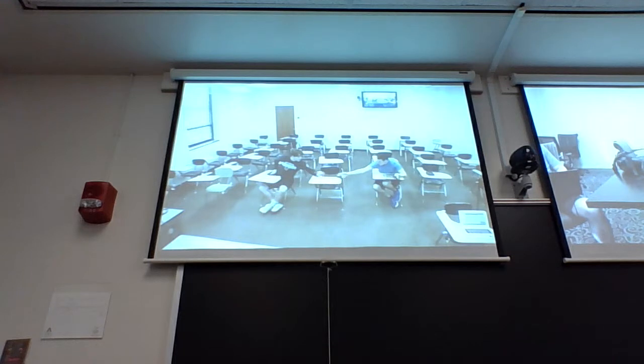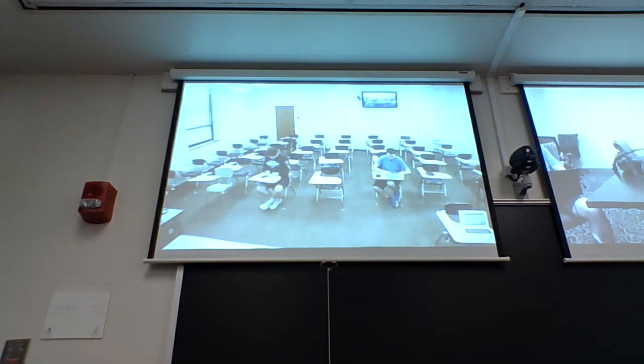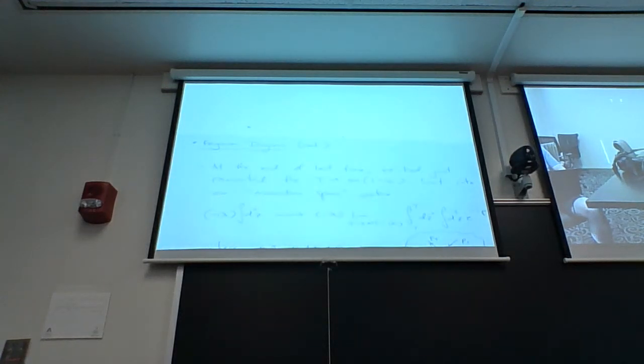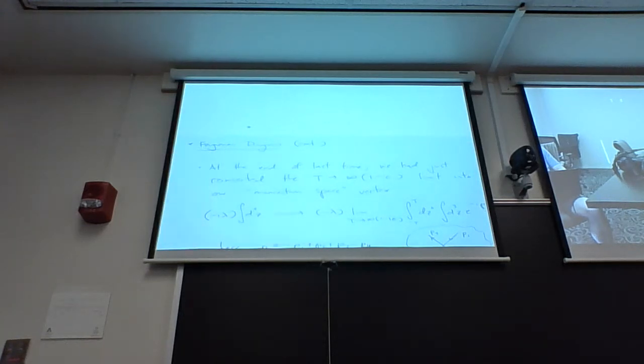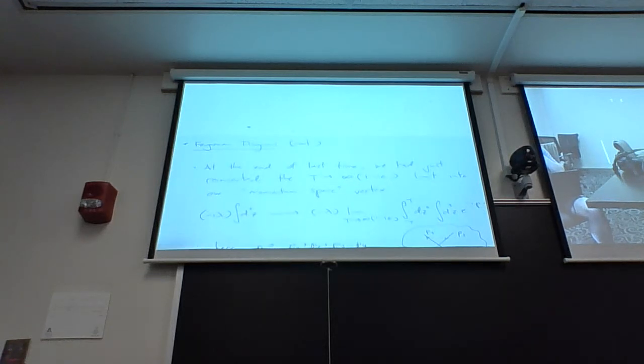At the end of last time we were finally getting close to being able to write down our two-point correlation function in general, but we had stumbled upon the fact that at some point we had dropped our t→∞ limit. I went back and looked — sure enough we did introduce it because we wanted to isolate the free field theory ground state, the vacuum state. So we introduced that limit to kill off all the higher-order terms and replace our vacuum state in the interacting theory with our vacuum state in the non-interacting theory. Last time we had to put it back in, and we decided to put it back in the vertex correction, in the vertex rule.